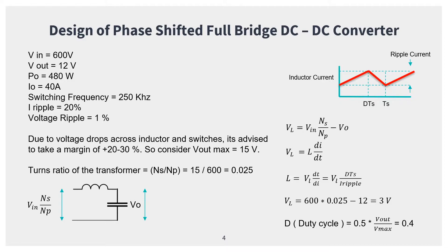Since we have so many switches, there will be a voltage drop across the inductor and the switches, so we must account for this. We consider a maximum output voltage of 15 V, while the desired output voltage is 12 V. The turns ratio of the transformer is given by the number of turns in the secondary divided by the number of turns in the primary, which equals output voltage divided by input voltage = 0.025.